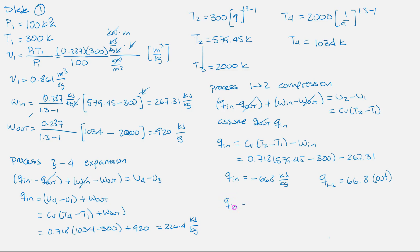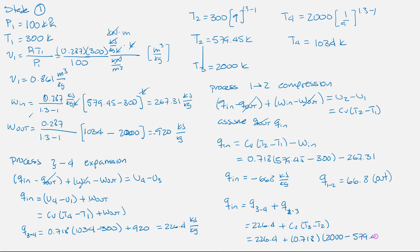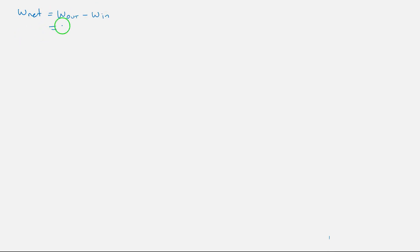Now we need to compute the total Q-in, which equals the heat going in during the expansion process plus the heat from the combustion process. This total Q-in will be approximately 244 kilojoules per kilogram. This is the Q-in we will use in our efficiency calculation. Our net work is the total work-out minus work-in, giving net work equal to 653 kilojoules per kilogram. We can now compute our thermal efficiency.